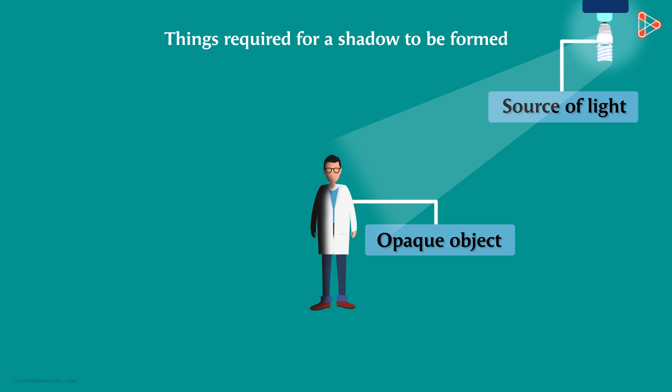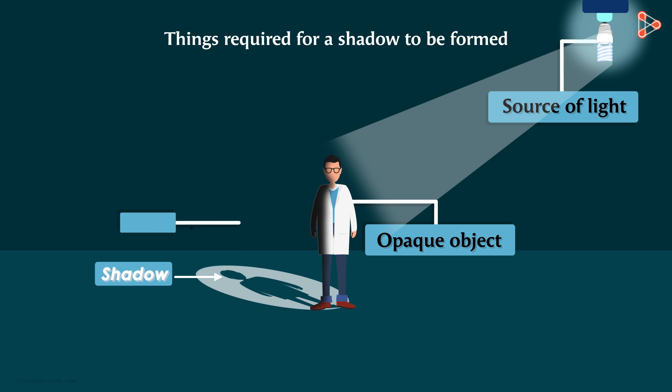What does this tell us? It tells us that we also need a surface on which a shadow can be formed. That surface will make us see the shadow.